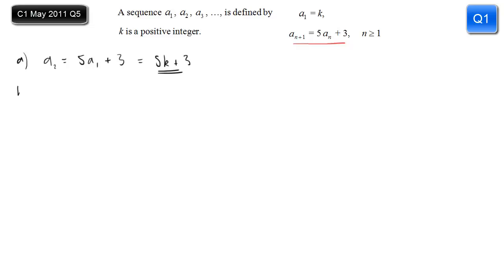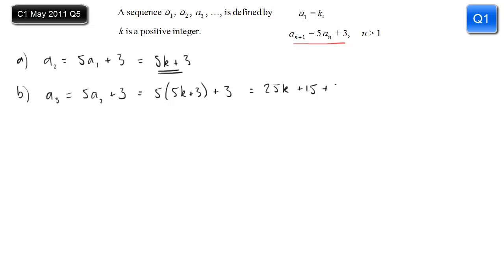For part b, we want to work out the third term, so we do five times the second term add three — five times what we've just worked out. This is a 'show that', so be careful not to skip any steps. Multiply out the brackets and tidy it up and you get the answer they were looking for.